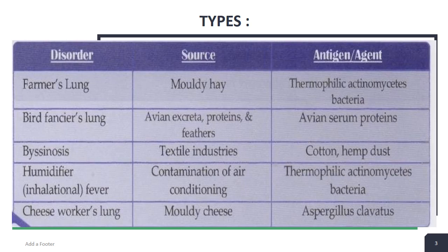Bird fancier's lung: its antigen is avian serum proteins. The source is avian excreta, proteins, and feathers. So basically the birds are causing this disease.